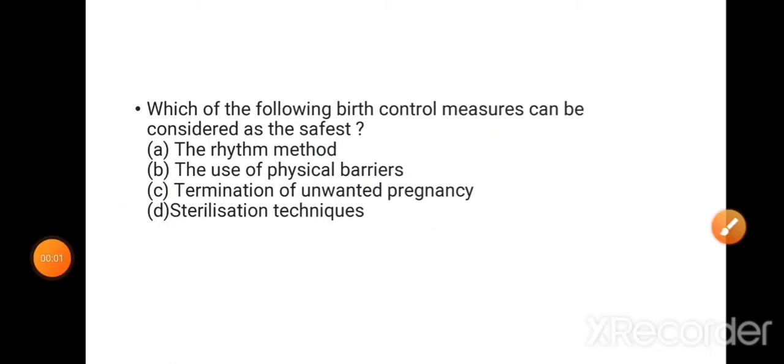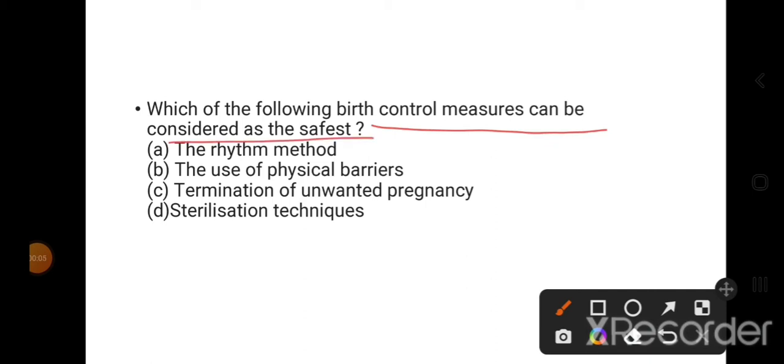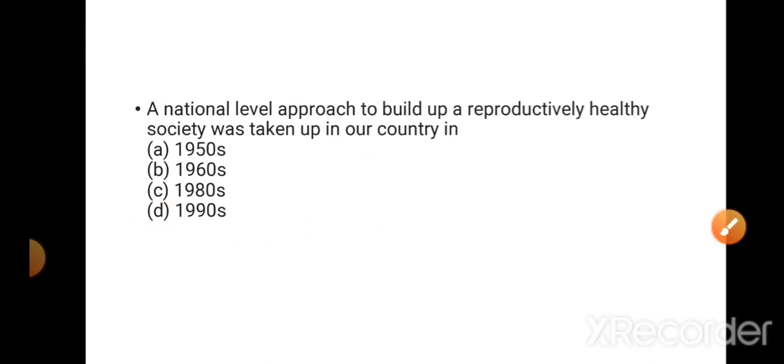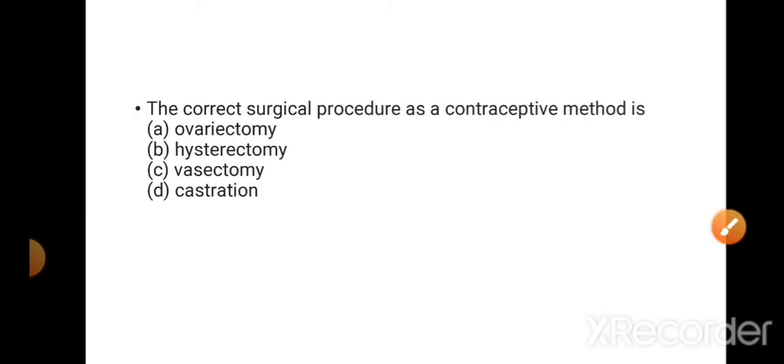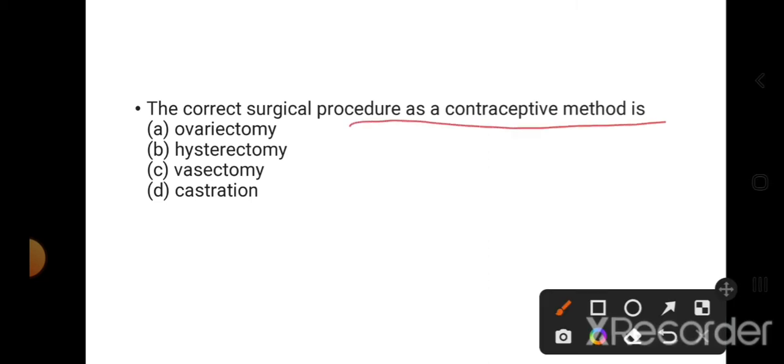Which of the following birth control measures can be considered safest? The sterilization techniques are the safest methods. A national level approach to build a reproductively healthy society was taken up in our country in the 1950s. This is the right option. The correct surgical procedure as a contraceptive method is: oophorectomy is removal of ovaries, hysterectomy is removal of uterus, vasectomy is cutting the vas deferens and tying it as a contraceptive method. So this is the right answer. In castration, it is the removal of testes.